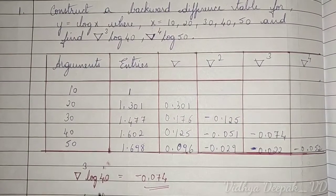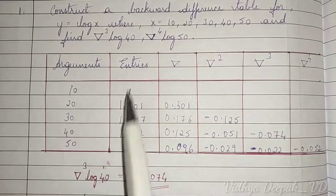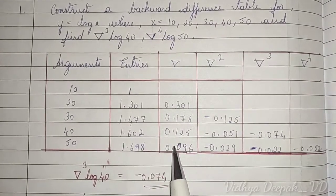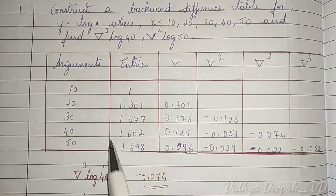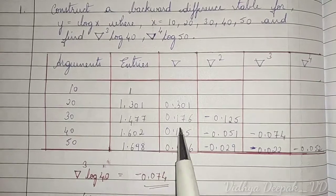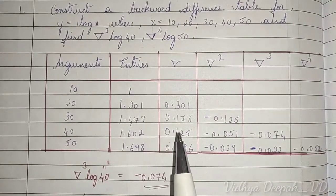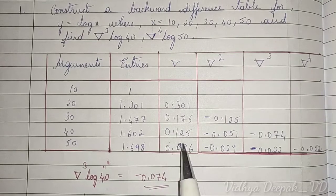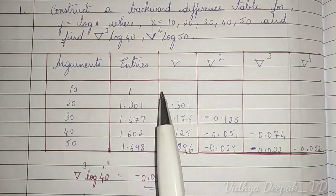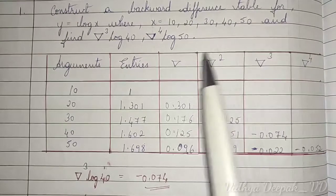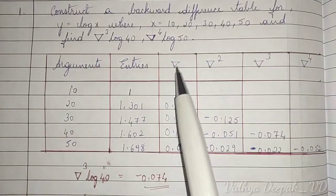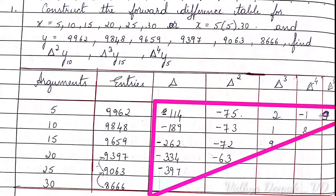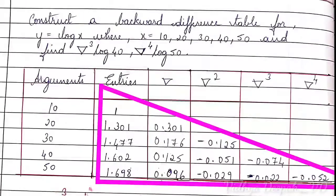Here is a backward difference table. For forward difference we enter from the first line, but for backward difference we enter from the last line — this minus this, this minus this. That is the only difference: backward difference is entered from the last line, forward difference from the first line. The symbol for backward difference is nabla (∇) and for forward difference is delta (Δ).